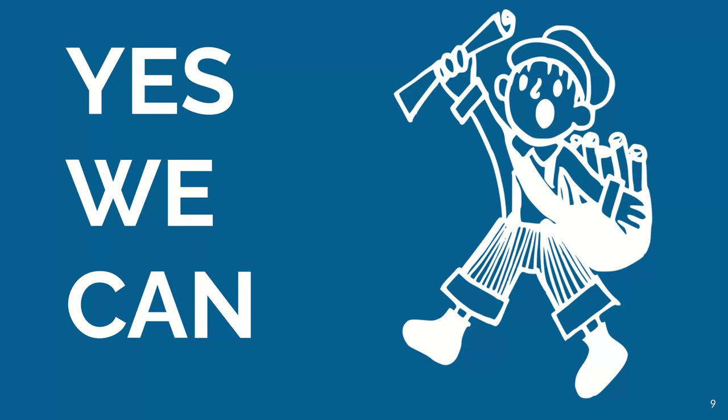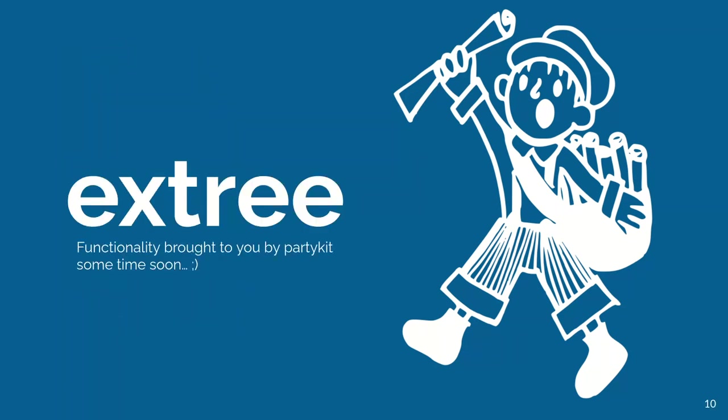And we go even further and created a functionality that we call xtree for extensible tree, that allows you to select different functions for the variable selection as well as the split selection strategy. So we really see that as two separate steps now, and you just plug in a different function for whatever you want to do.